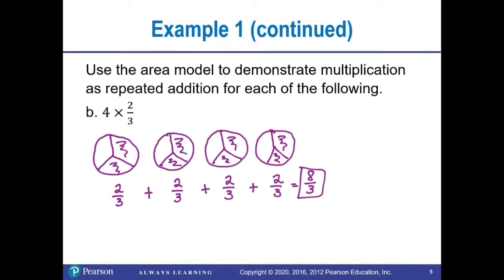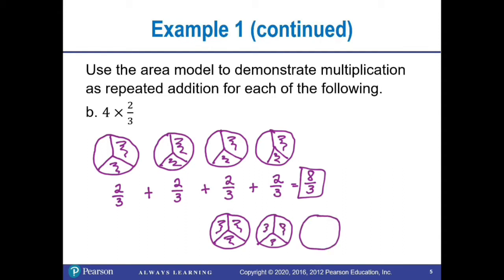Again, I can change eight-thirds to a mixed number by dividing, or I can use pictures. Since the denominator is three, I draw a circle divided into three parts and shade and count: one, two, three. Draw a second circle and continue: four, five, six. Draw another circle and continue: seven, eight. So I have eight-thirds shaded. That's two wholes, and the last circle has two out of three parts shaded, so we have two and two-thirds.